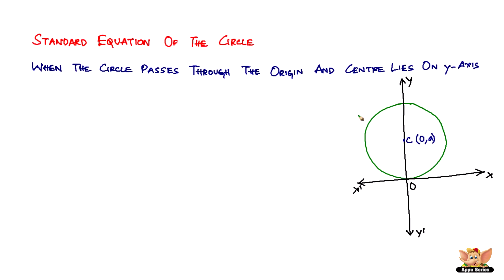Here we are with the diagram. What happens when a circle passes through the origin? Here it is. And then when the center lies exactly on the y-axis.